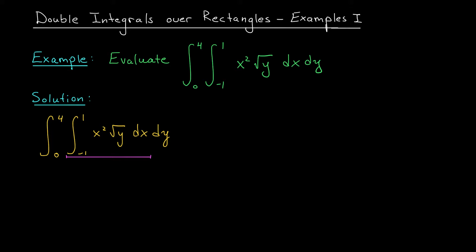We find an antiderivative, plug in the upper bound, plug in the lower bound, and take the difference. So the question is, what's an antiderivative for x squared root y if we're integrating with respect to x? Well, since root y is going to be treated like a constant, our antiderivative will be x cubed over 3 root y.